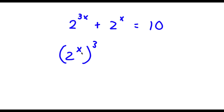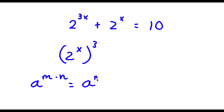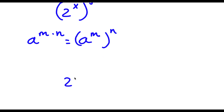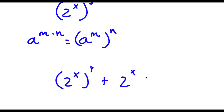I can do this because if I have something in the form a to the power of m times n, this is the same thing as a to the power of m, to the power of n. So now I have 2 to the power of x, to the power of 3, plus 2 to the power of x, is equal to 10.